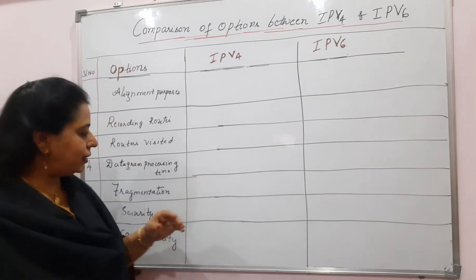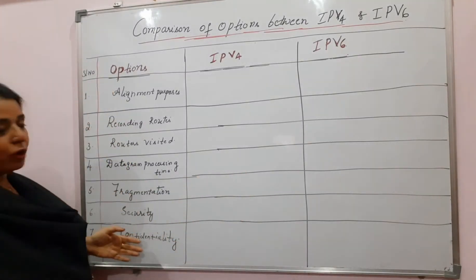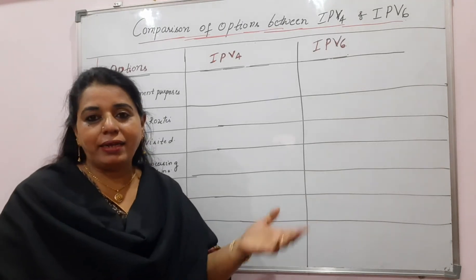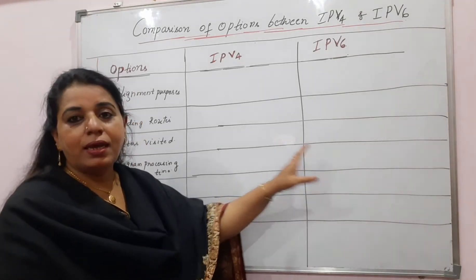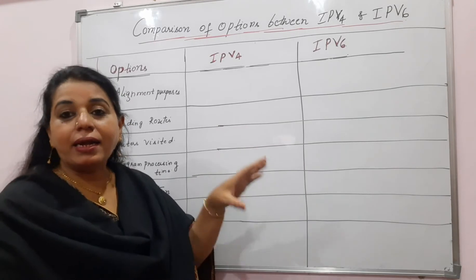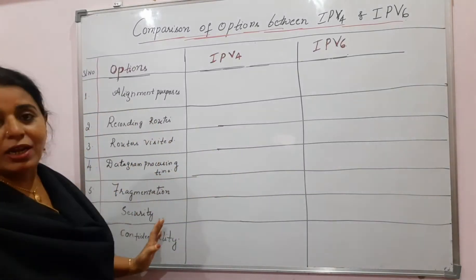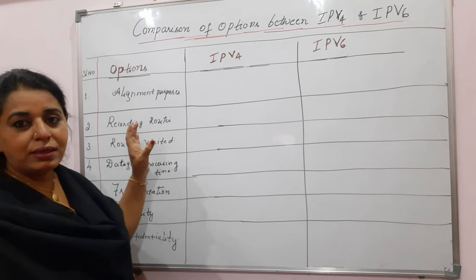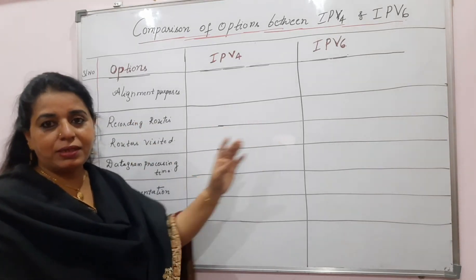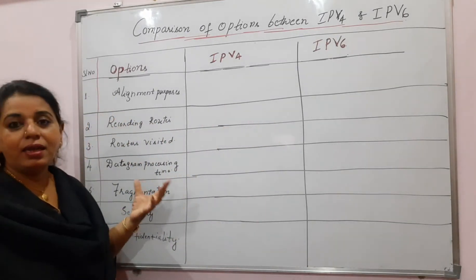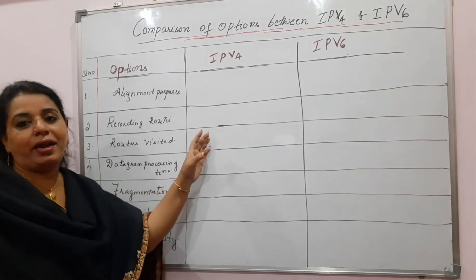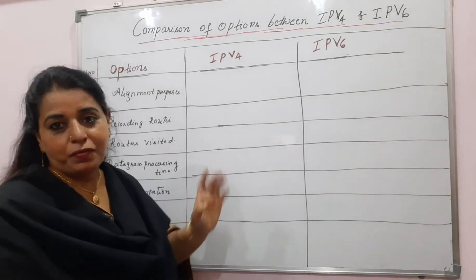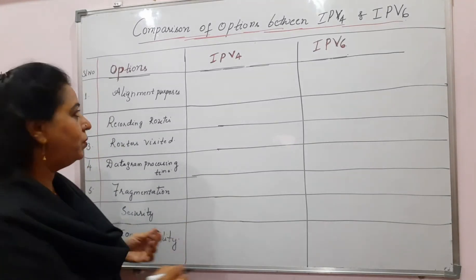I have included the name of the options or the functionality which we expect as an option in either IPv4 or IPv6. You can write down the option name — here I am writing in general the functionality, and you have to write the exact name of the option in IPv6 and IPv4.